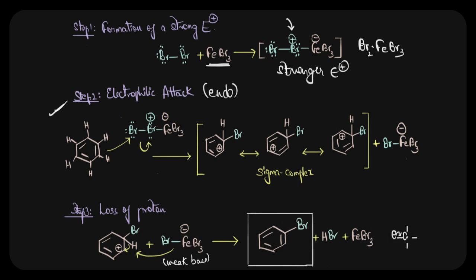Now because in this step aromaticity is regained, this reaction or this step is actually exothermic, and the overall reaction is exothermic by 45 kilojoules per mole. Chlorination of benzene also follows the same mechanism and works in the presence of Lewis acids like FeCl3 or AlCl3.